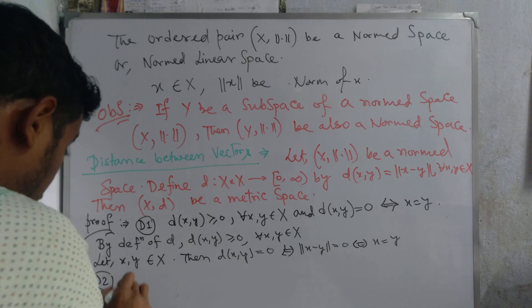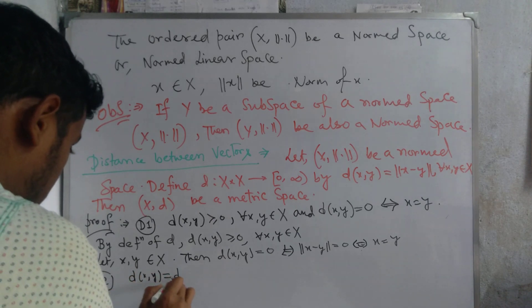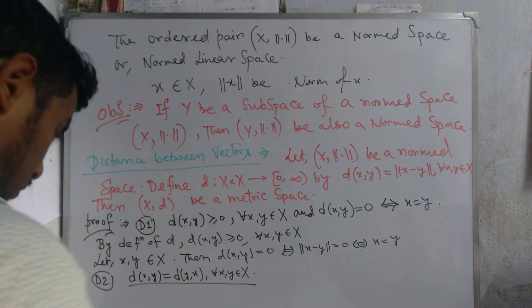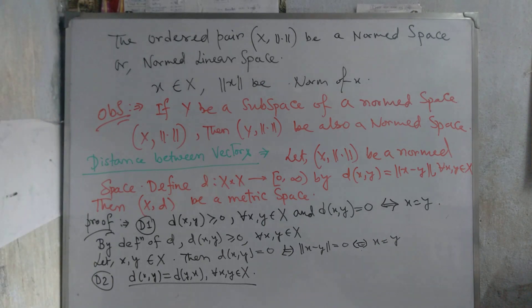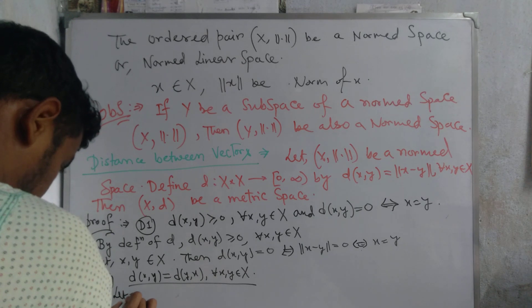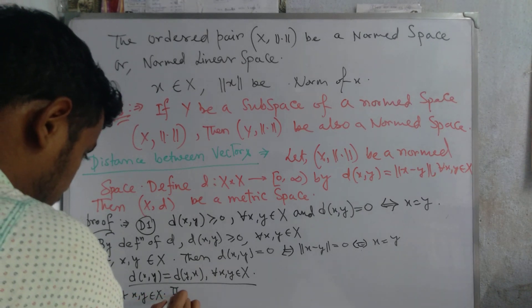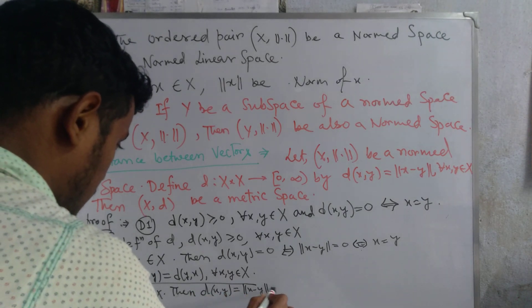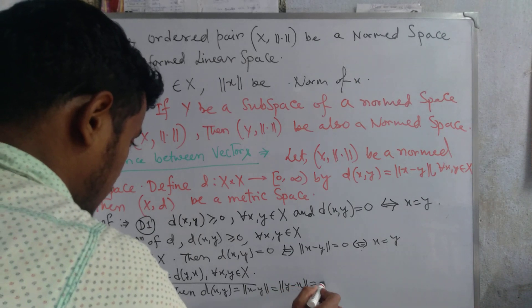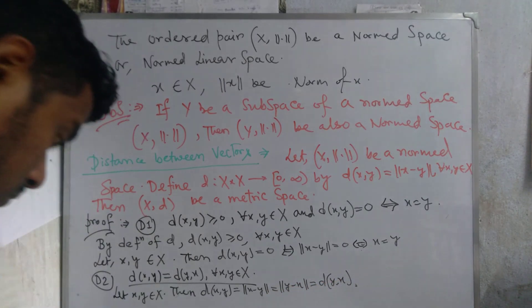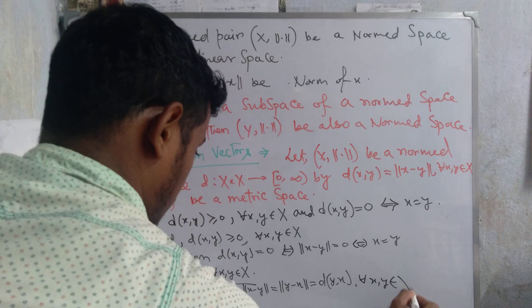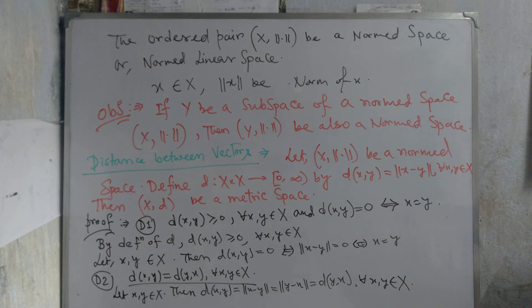Second property d2: We prove d(x, y) = d(y, x) for all x, y in X. Let x, y belong to X. Then d(x, y) = ‖x − y‖ = ‖y − x‖ = d(y, x) for all x, y belonging to X.